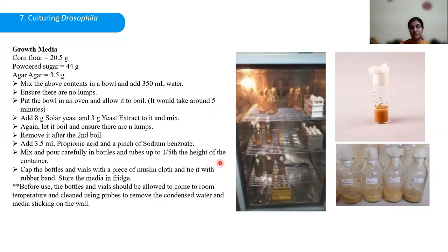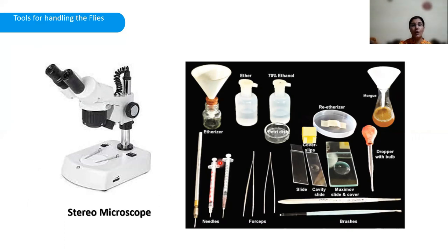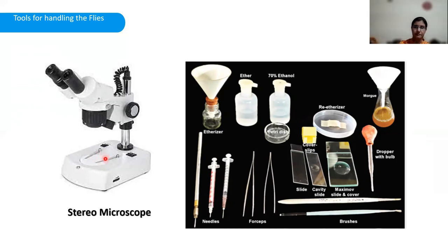For transfer of flies to fresh media, some tools are required. The most important is the stereo binocular microscope, used to examine the flies. We take out the flies, anesthetize them, and examine the male and female features. Other tools needed include conical funnels, flasks, forceps, soft bristle brushes, a dropper, and a re-etherizer.